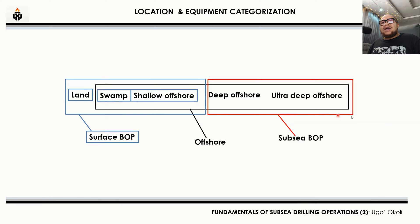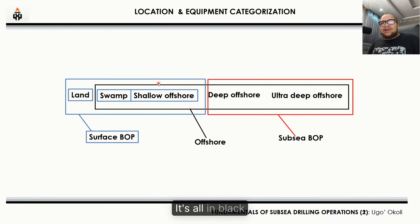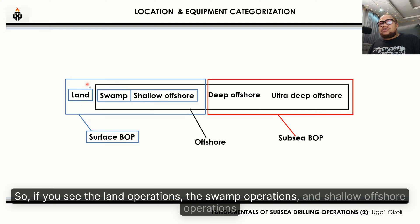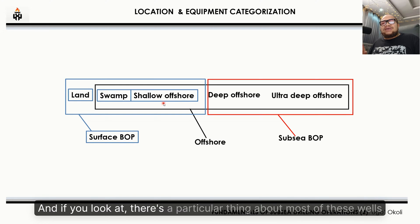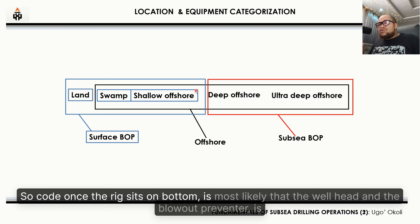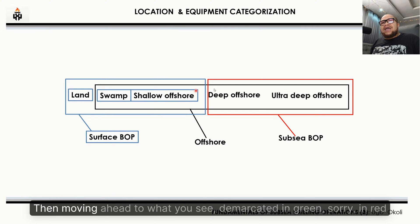In black you can see everything that is the offshore terrain: swamp, shallow offshore, deep offshore, and ultra-deep offshore. In blue are everything — or rather wells — that will use the surface BOP. So land operations, swamp operations, and shallow operations, which include wells drilled from the tender assist rig and the jack-up rig. Most of these rigs sit on bottom, and once the rig sits on bottom, the wellhead and blowout preventer are most likely going to be installed on surface.